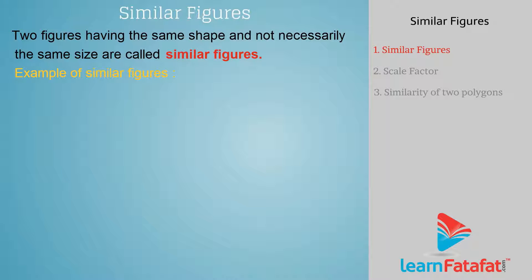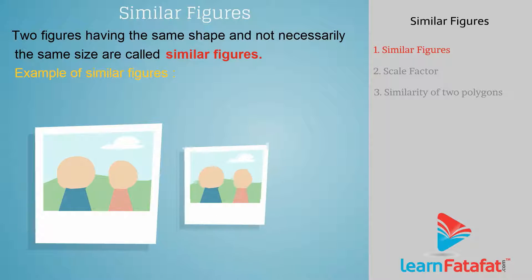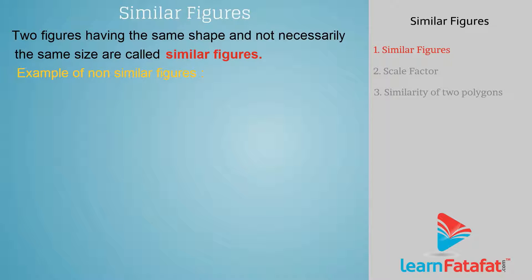Examples of similar figures are circles, squares, and triangles. Another example is photographs of the same person but in different sizes. Examples of non-similar figures are a pair of a circle and a square. They are non-similar figures because they are not of the same shape.